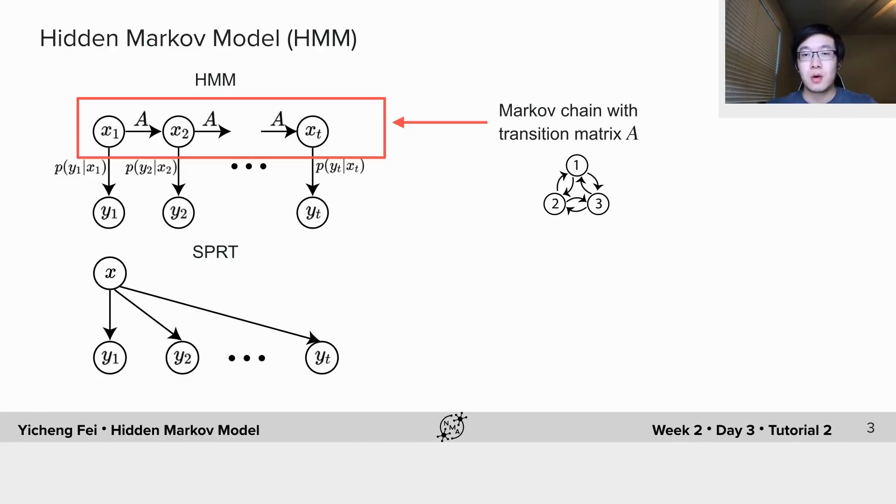In neuroscience, we often think a system like a single neuron or population of neurons is transitioning between a set of discrete states. For example, we believe a system is switching between the active state and inactive state, or between awake state and a sleep state.